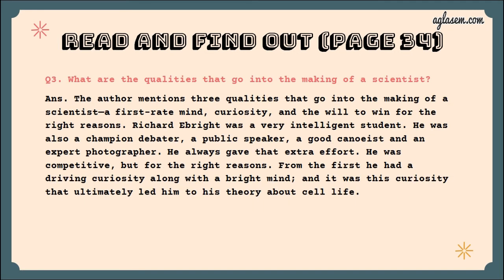Question number three: what qualities go into making a scientist? The author mentions three qualities: a first-rate mind, curiosity, and will to win for the right reason. Richard was a very intelligent student — also a champion debater, public speaker, canoeist, and expert photographer. He always gave that extra effort. He was competitive but for the right reasons. From the first, he had driving curiosity along with a bright mind, and it was this curiosity that ultimately led him to his theory about cell life.